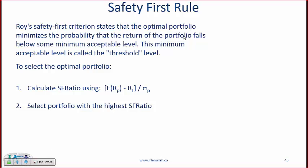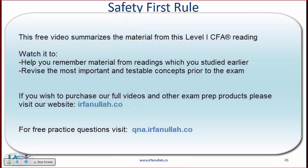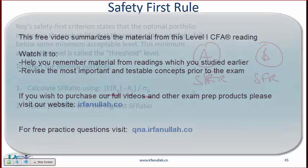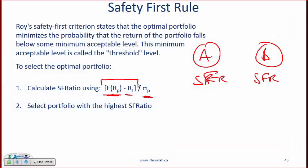Safety first rule. The context here is that if you have two portfolios A and B, one way of determining which is better or which is safer is to figure out the safety first rule which is the return of the portfolio minus some threshold level or safety level divided by the risk of the portfolio. So you will come up with a safety first ratio for both and then pick the one that has the higher safety first ratio because the higher safety first ratio is giving you a higher return per unit of risk.